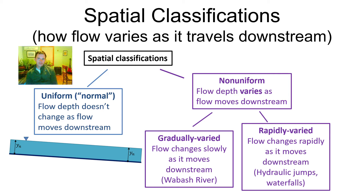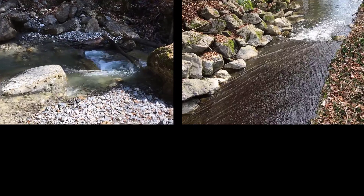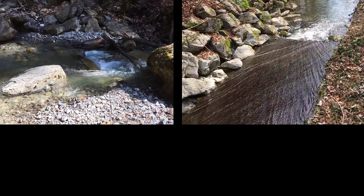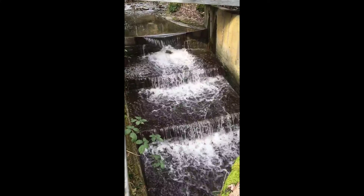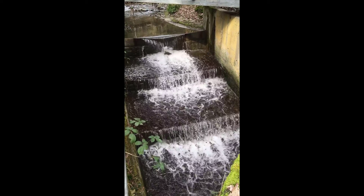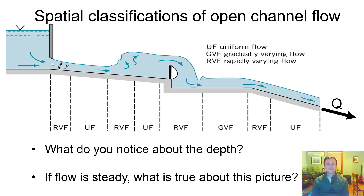Rapidly varied flow is the last spatial classification. Rapidly varied flow is where the flow varies rapidly. Good examples are a hydraulic jump — you'll have a lab on that — and a waterfall where the flow abruptly cascades over a drop. These are good examples of rapidly varied flows where you see the white water in particular. The triple step shown is a real rapidly varied flow as well.